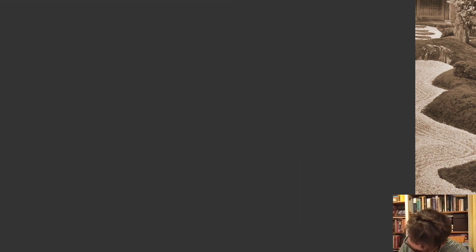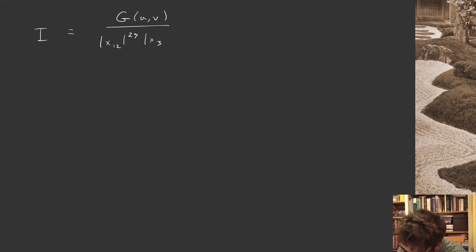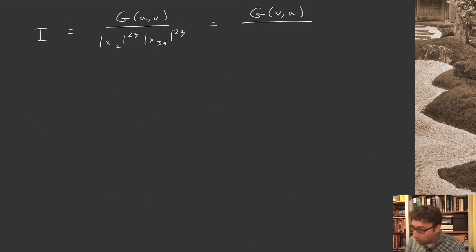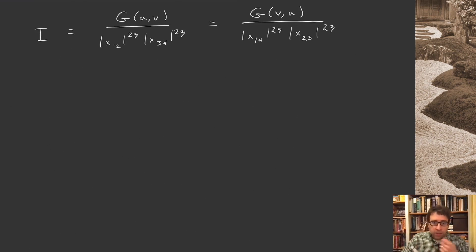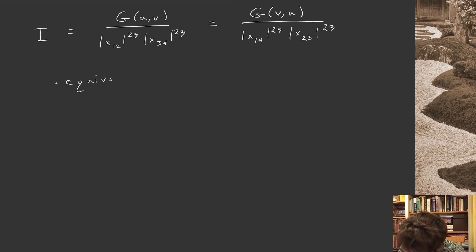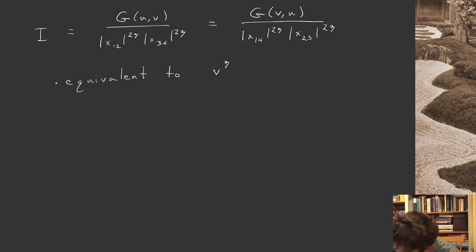This means the four-point function written as g(u, v) / (x12^{2eta} x34^{2eta}) had better equal g(v, u) / (x14^{2eta} x23^{2eta}) — otherwise the conformal field theory is inconsistent. Massaging this formula to express it purely in terms of cross ratios, this equality is equivalent to: v^eta g(u, v) = u^eta g(v, u).